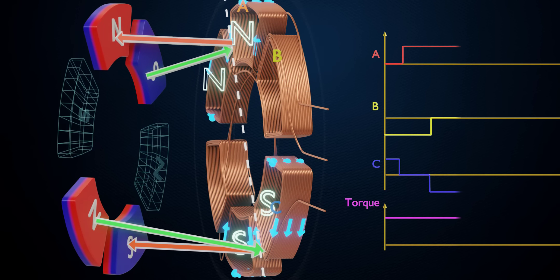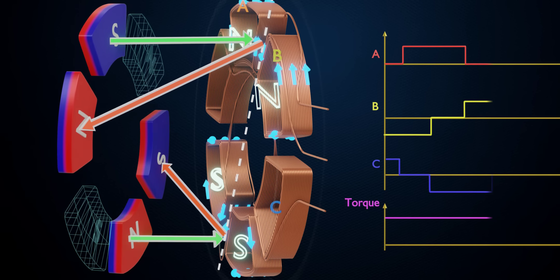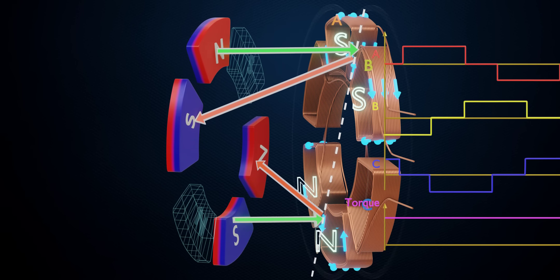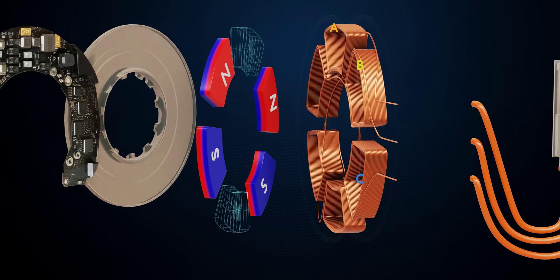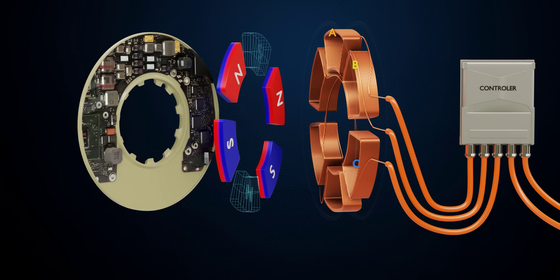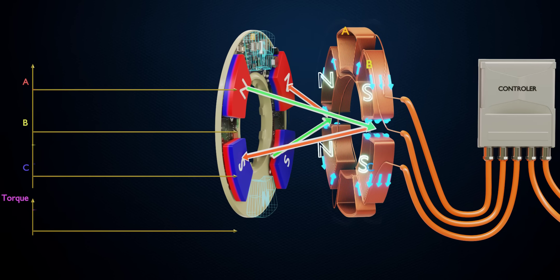The question is, how will you decide which coil to energize to get continuous rotation? For this purpose, we use a smart electronics controller. The sensor determines the rotor's position, and based on this information, the controller decides which coil to energize.